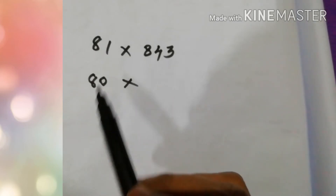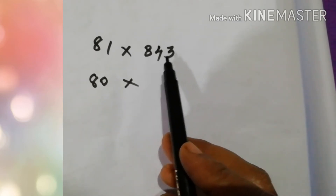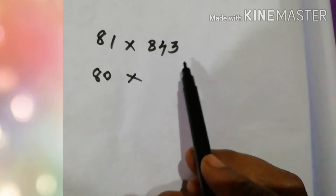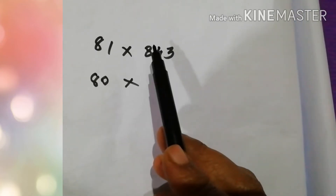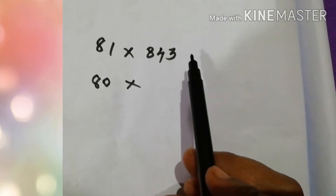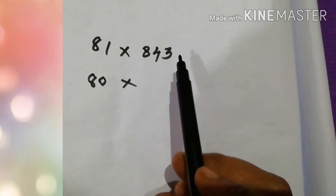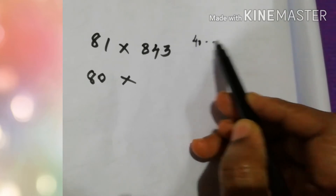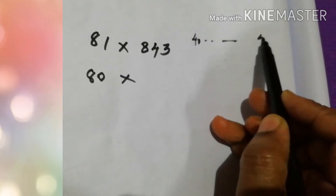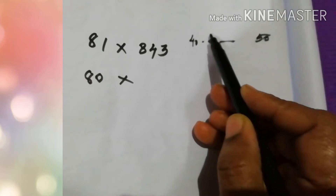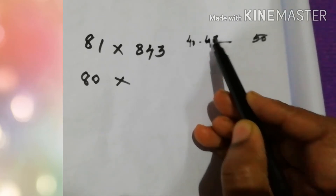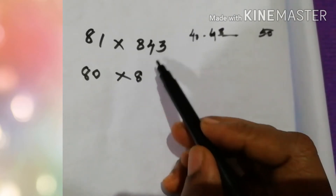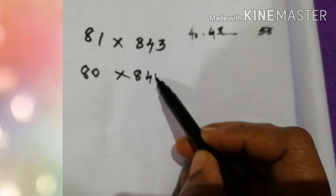Estimate to tens. Next, this is a three-digit number. How can we estimate this number? It is 843. Which number is nearest to 43 — is it 50 or 40? We know 43 is nearest to 40. So we estimate this number to 840.